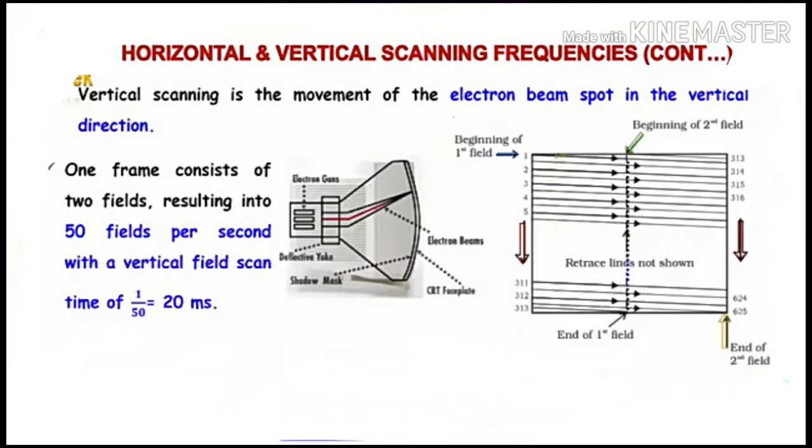One frame consists of two fields, resulting in 50 fields per second with a vertical field scan time of 1 divided by 50, which equals 20 milliseconds.